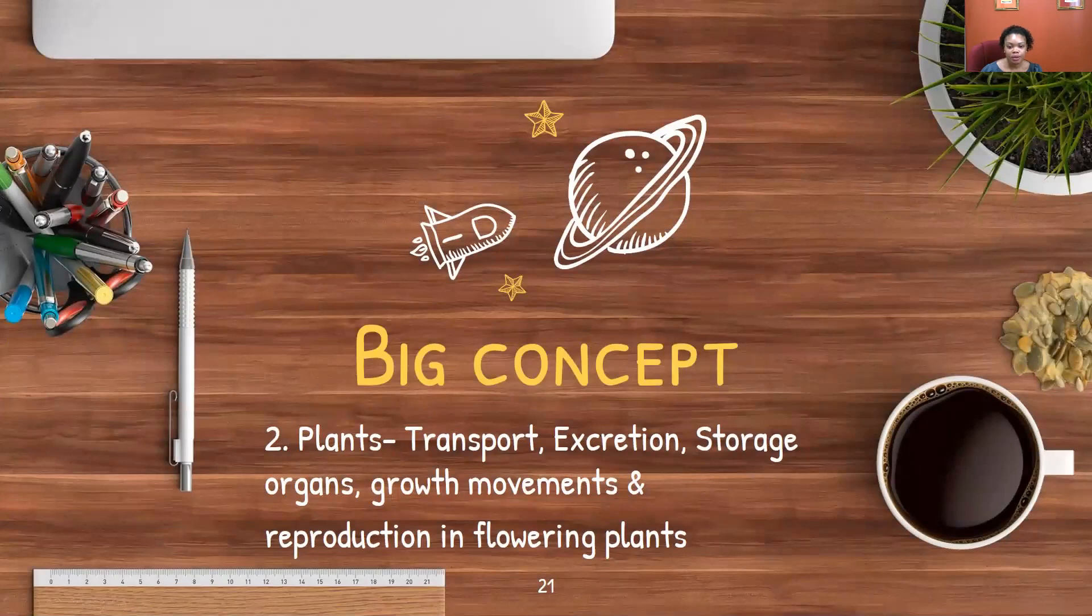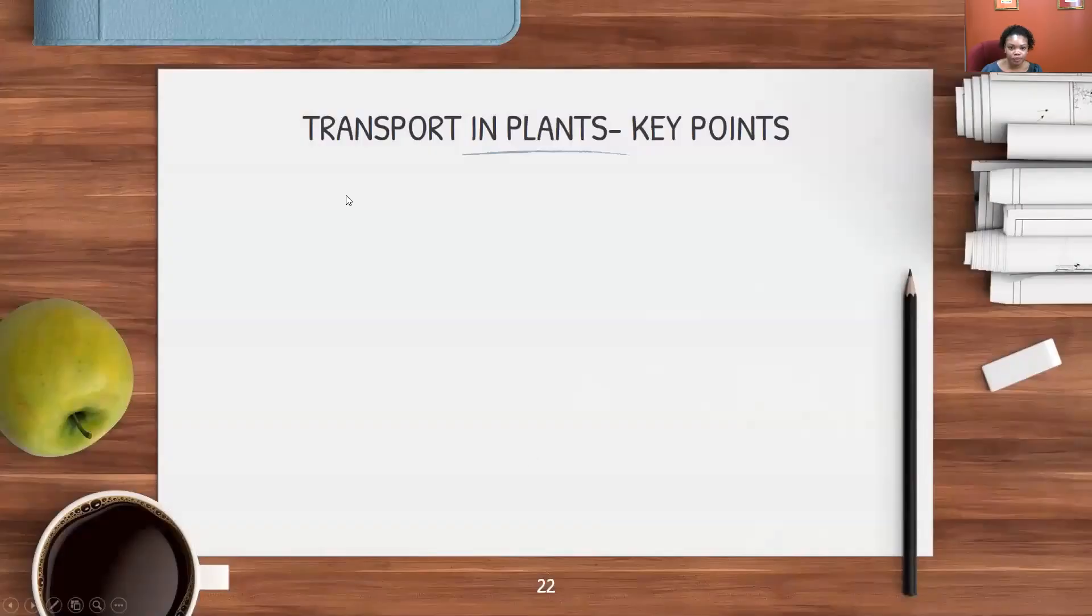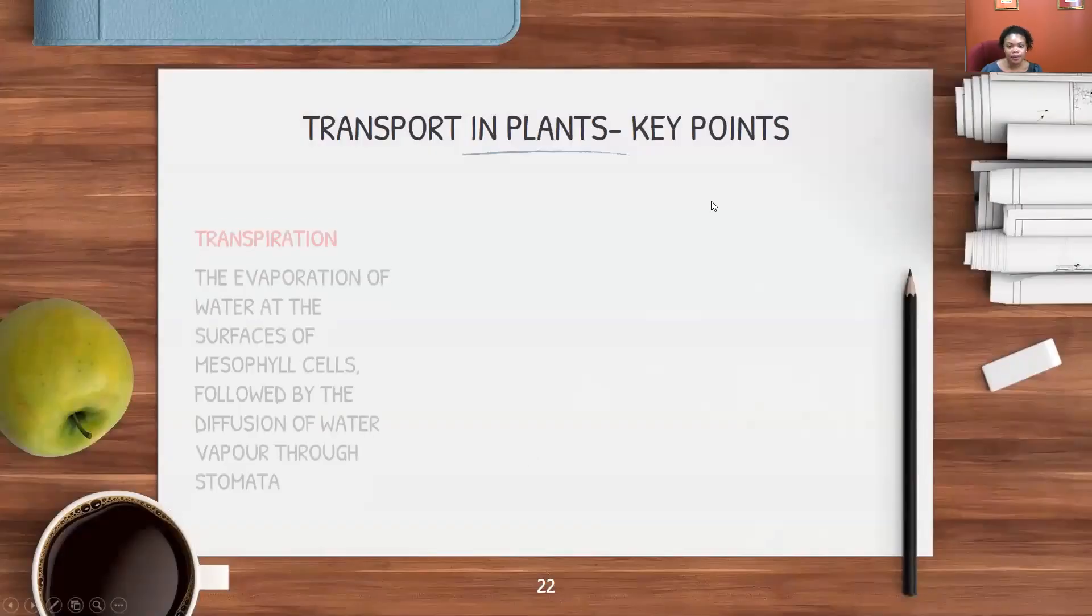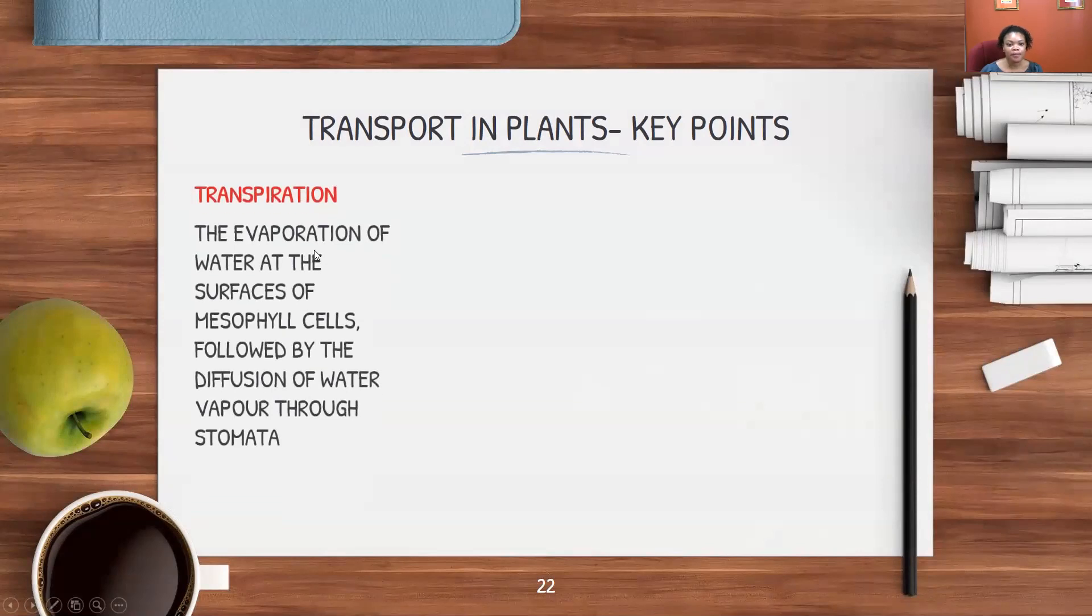Big concept number two: plants, transport, excretion, storage organs. We're looking at plants now. Transport in plants, key points.